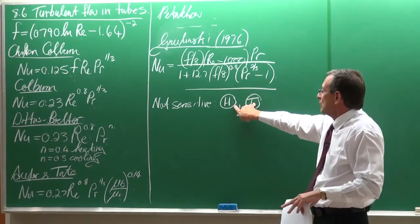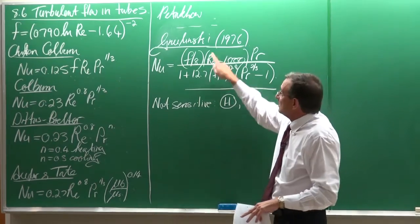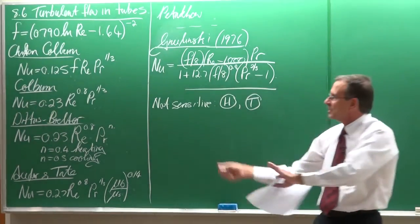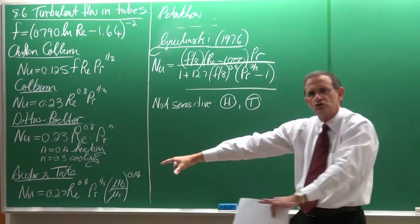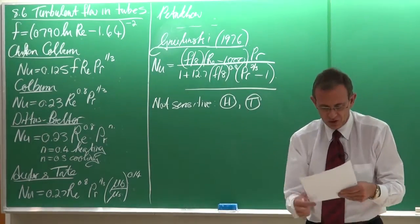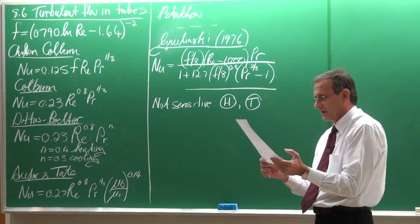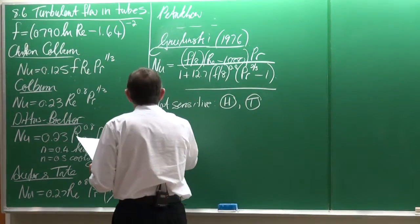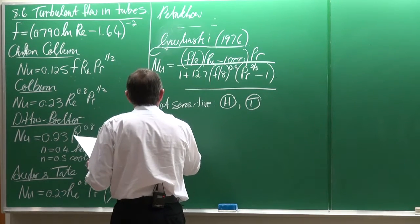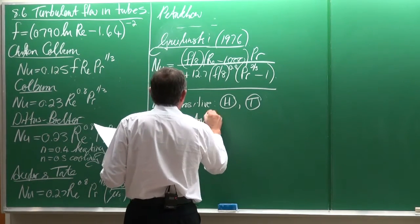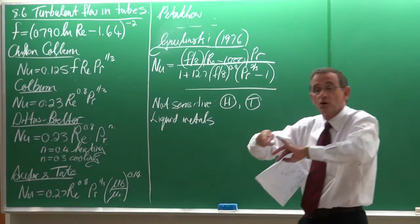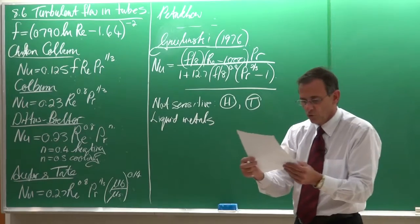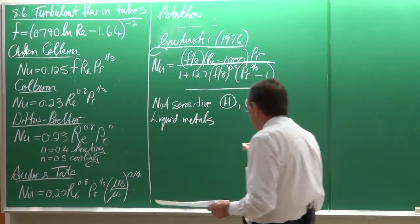they are not sensitive. So it doesn't matter if it's a constant wall temperature, if it's a constant heat flux, all these equations can be used for that. So I think that is one of the first things that I would like to point out. Then, you will also see that there is a special note for liquid metals. So for liquid metals, it needs to be treated a little bit different. The Prandtl numbers are very small. Again, there are special equations for them to be used.